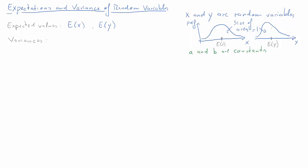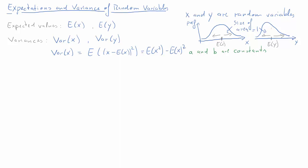Both our random variables will have an expected value: E of x and E of y. Then we need to think about variances. Variances are a measure of how dispersed the random variable is — how variable the outcomes are — and again we will have a variance for x and a variance for y. Variances can be expressed in terms of expectations, which will be extremely useful. The variance of x is defined as the expectation of x minus the expectation of x, squared. An alternative way of writing this is: the variance of x equals the expected value of x squared minus the expected value of x, squared.